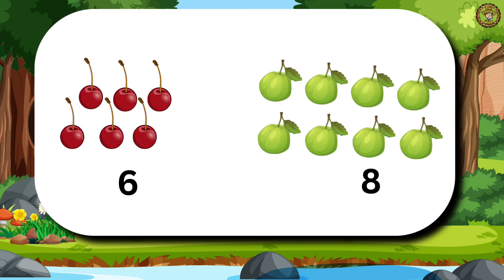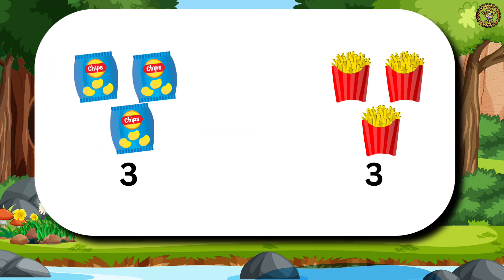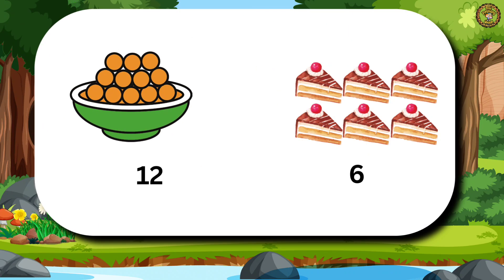Then, we have 6 cherries and 8 guavas. Tell me, which sign will come here for greater than? That's correct. Here, we will use this sign for greater than. Then comes 3 packets of chips and 3 packets of french fries. Tell me, which sign will come here? Here, we have a bowl of 12 ladoos and 6 pastries. Tell me, which sign will come here for less than? That's right.